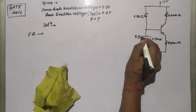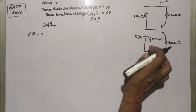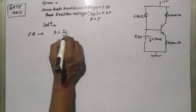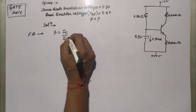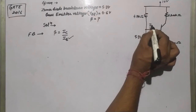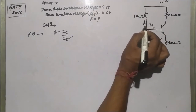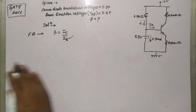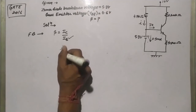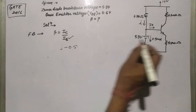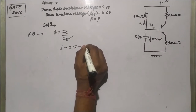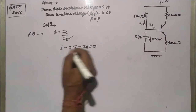Now we have to calculate beta. Beta is equal to IC divided by IB. So we need IB. Let's calculate IB. Applying KCL: the current I coming from above minus 0.5 milliamperes minus IB equals zero.